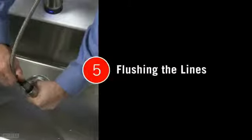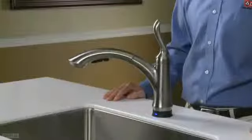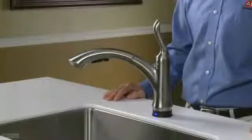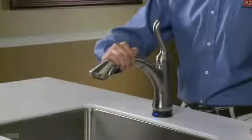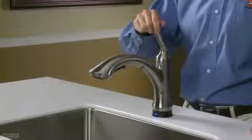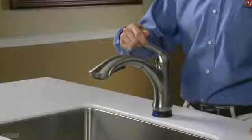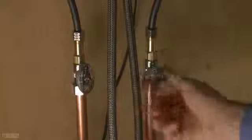The last step in installation is to flush the lines. It's now time to turn the water on. Place the spout over the sink before turning on the hot and cold water stops. Turn the handle to the off position. Turn on both hot and cold water supplies.